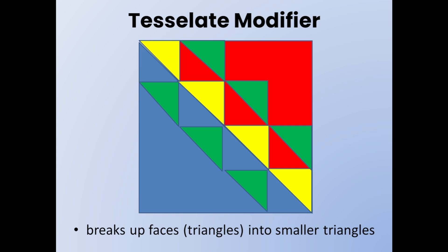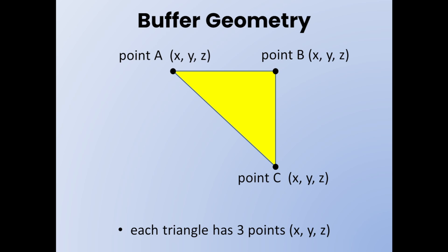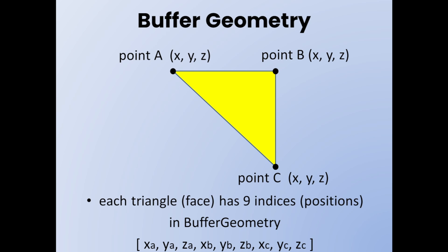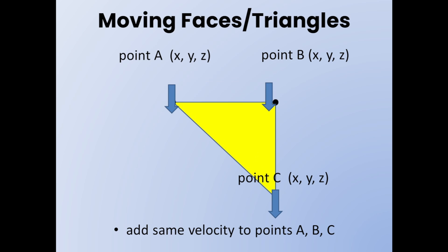In the buffer geometry, each face or triangle will have three points: point A, point B, and point C. Each point will have an X, Y, and Z position, so each triangle will have nine indices or positions in the buffer geometry array. To move these faces, we're going to give each point in a face a velocity and add that velocity to the point, moving the triangle in the direction we want. We have to make sure each point in a face has the same velocity.